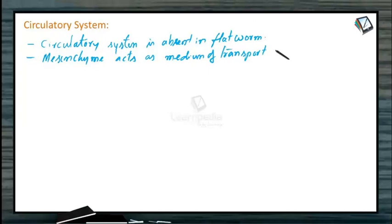Circulatory system is absent in flatworms, and mesenchyme or parenchyme acts as a medium of transport of nutrients and waste products.